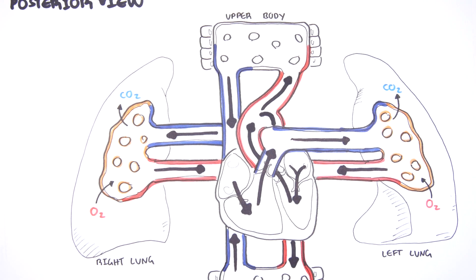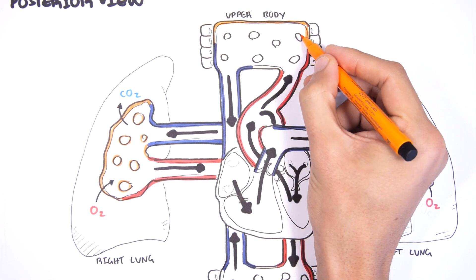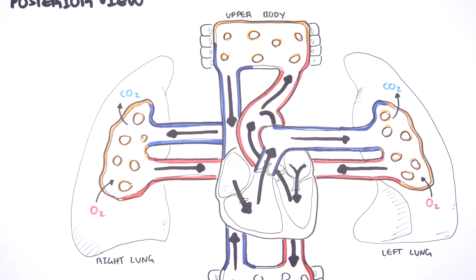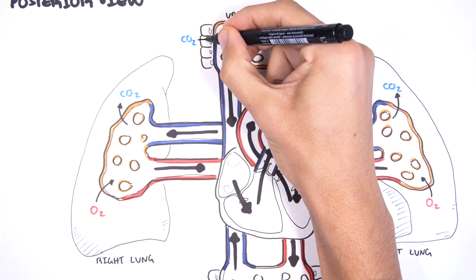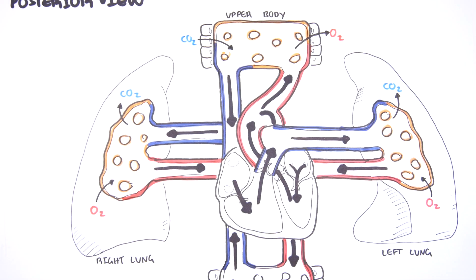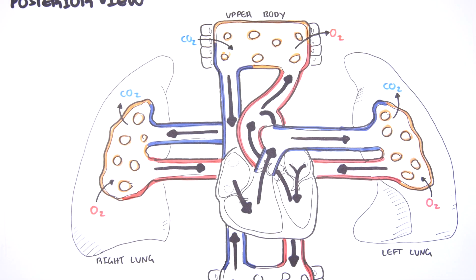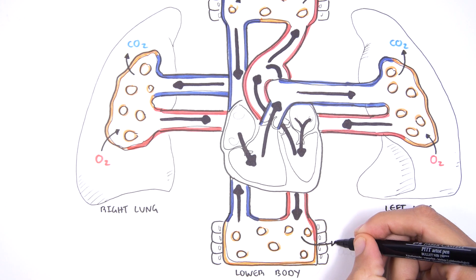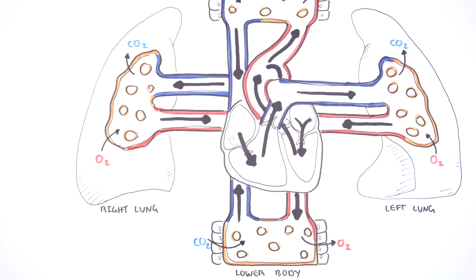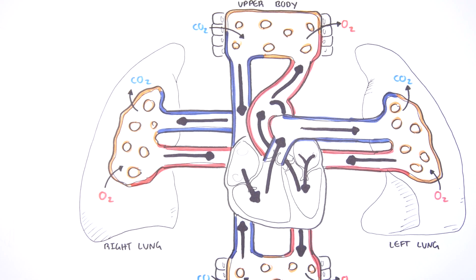Oxygen is delivered to the body tissues, and gas exchange occurs: oxygen is offloaded to the tissues and as a byproduct, carbon dioxide is released back into the blood. You then get deoxygenated blood returning to the right side of the heart, and the cycle continues. This diagram represents both pulmonary circulation and systemic circulation.